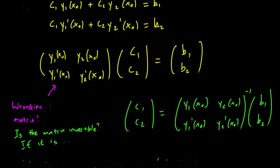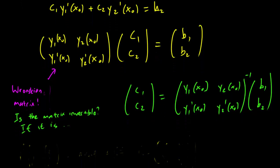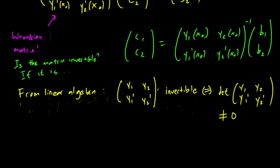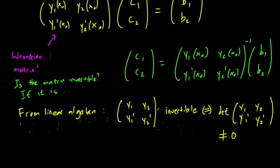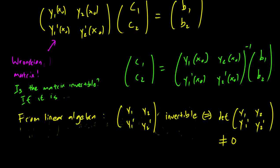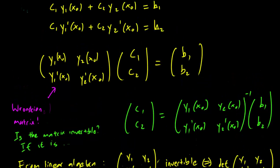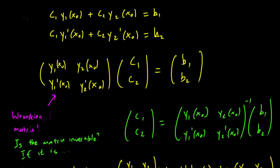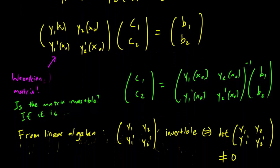But if you may recall, we have a condition as to when a 2x2 matrix is invertible. A matrix y1, y2, y1', y2' is invertible if and only if its determinant is non-zero. So that is why we need the Wronskian to be non-zero for c1y1 plus c2y2 to be the general solution.